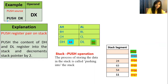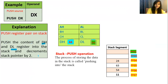The example I have taken is PUSH DX, in which DX is the operand. DX indicates the DH and DL registers — that is a 16-bit register. The instruction says: push the contents of DH and DL registers into the stack memory and decrement the contents of the stack pointer by 2.